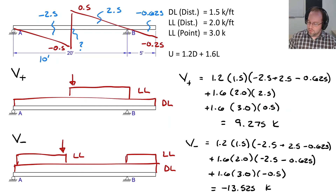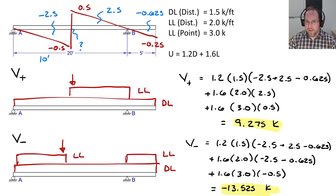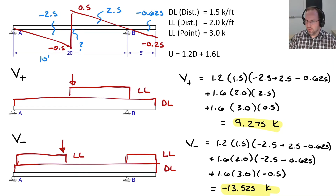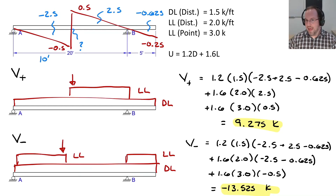From this result we know that shear at that mid-span location must be somewhere between −13.525 kips and +9.275 kips, regardless of where I place the load. These represent the envelope of shear demands at that particular location.